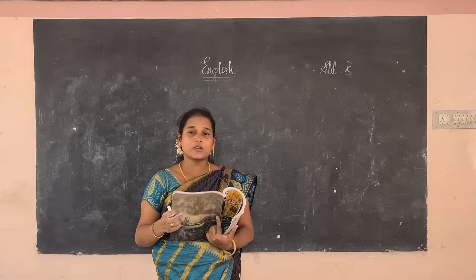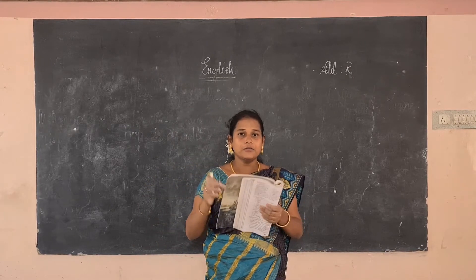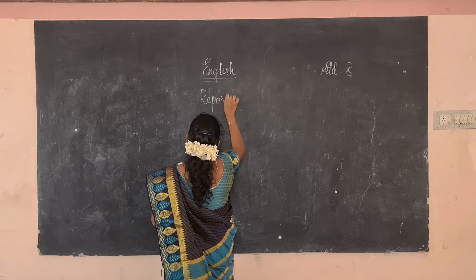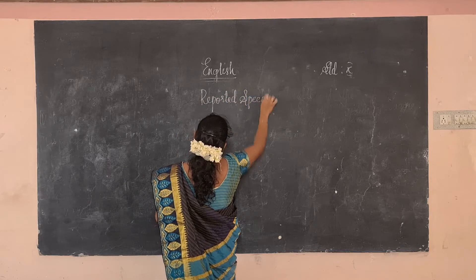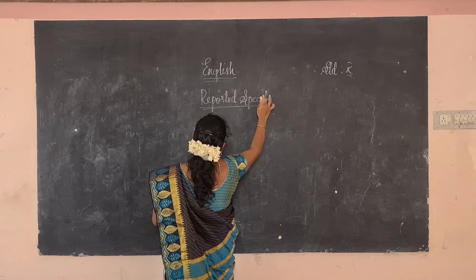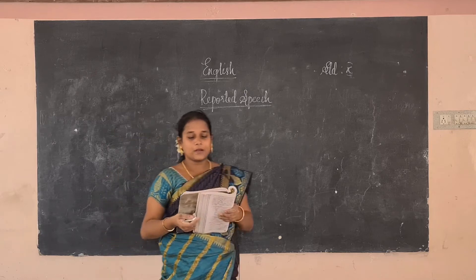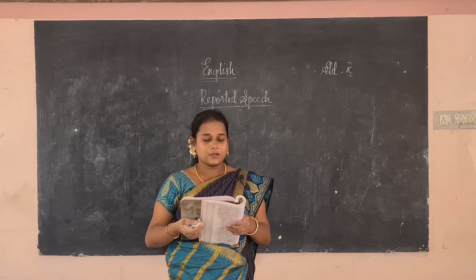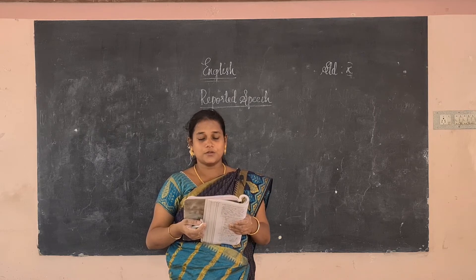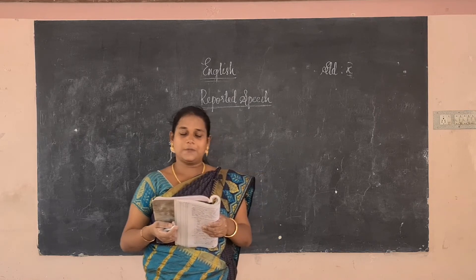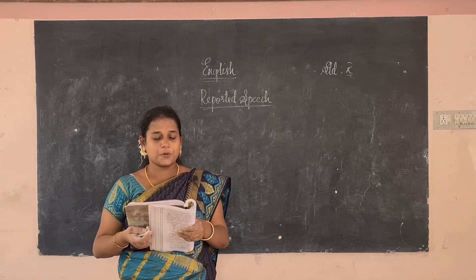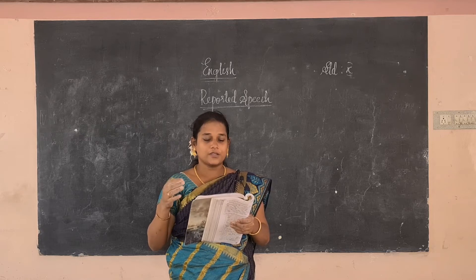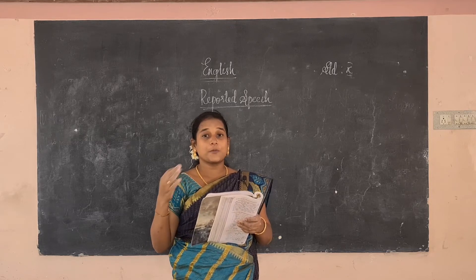Welcome. Today we are going to discuss reported speech — it is from Unit 5 grammar exercise. There are two main types of speech: direct speech and indirect speech, also called reported speech. Direct speech repeats the exact words the person used — what the person is actually speaking. Reported speech is how we represent the speech to another person.